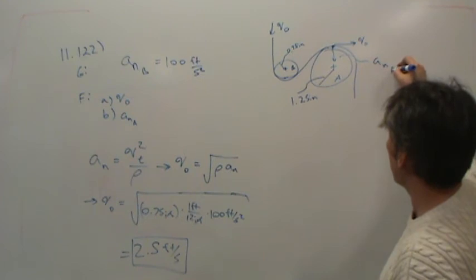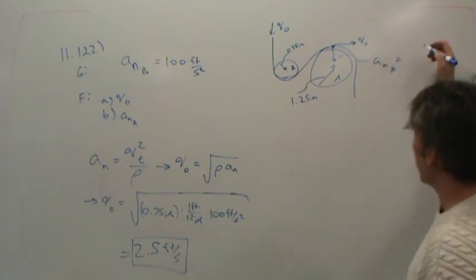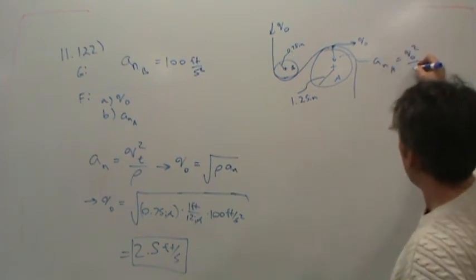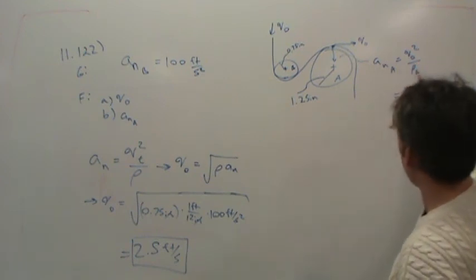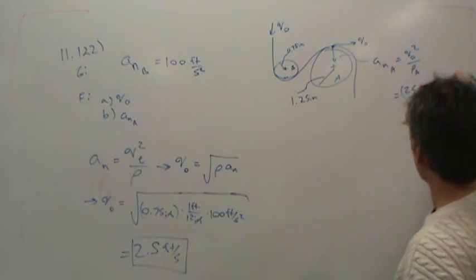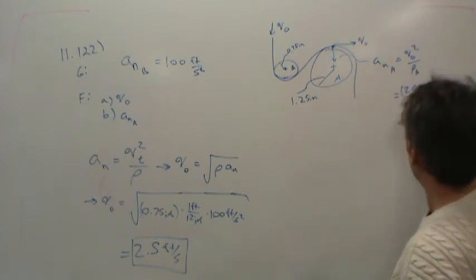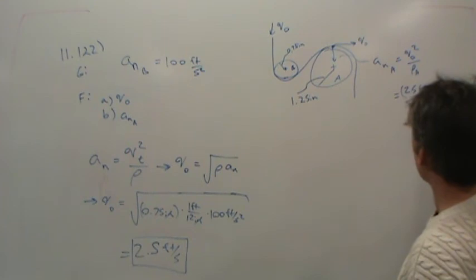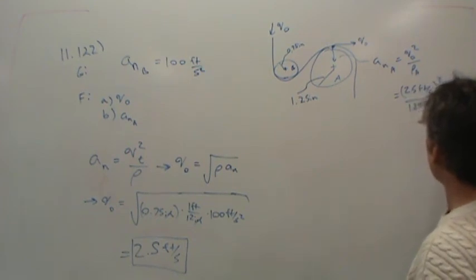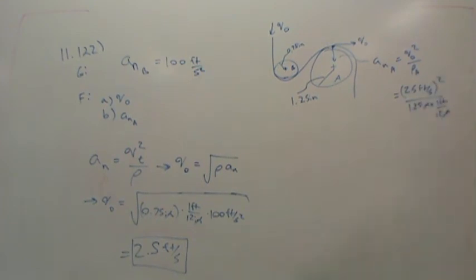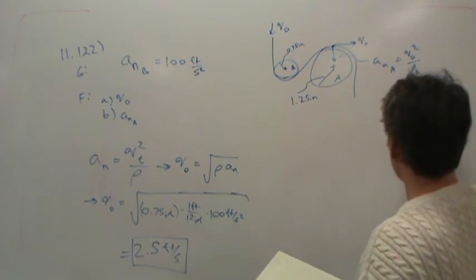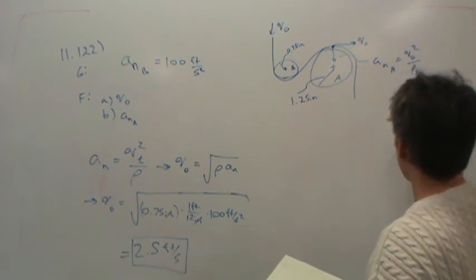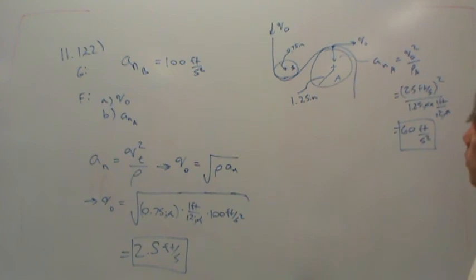Okay, so it's the same tangential velocity at every point on B and on A. And so the acceleration, the normal acceleration on A then, would just be related to that velocity but with a different radius. So this would be 2.5 feet per second squared divided by 1.25 inches times 1 foot per 12 inches. So the inches go away, and we should end up with feet per second squared. If you do that, you should come up with 60 feet per second squared. So there's the normal acceleration on A.